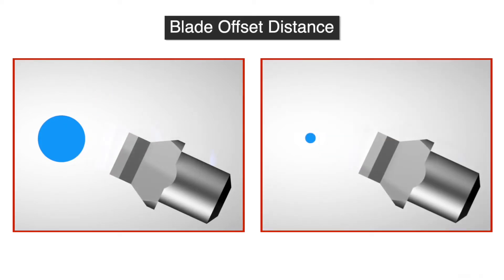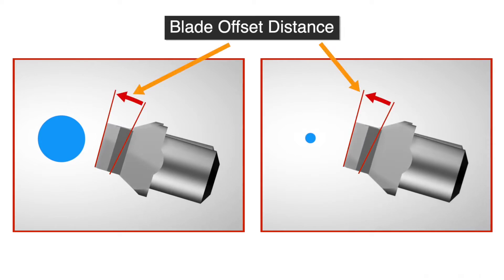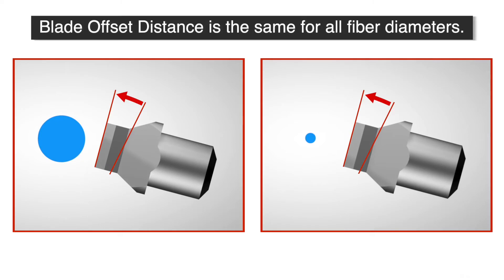The blade offset is the distance the blade moves off its starting or home position. The same blade offset applies to all cleave files and fiber sizes.